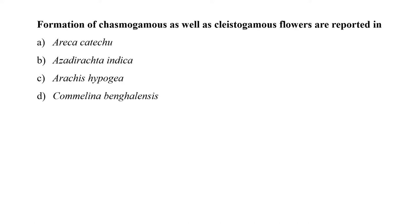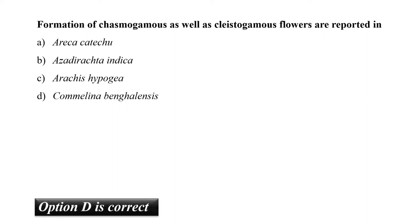The next question is: formation of chasmogamous as well as cleistogamous flowers are reported in? The correct option is D, that is Commelina benghalensis. This is because Commelina produces three types of flowers: male chasmogamous, hermaphrodite chasmogamous, and hermaphrodite cleistogamous.